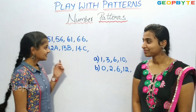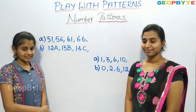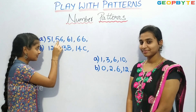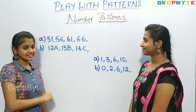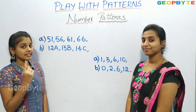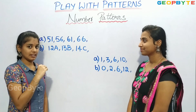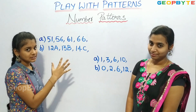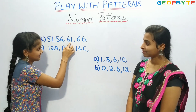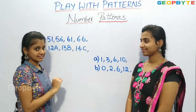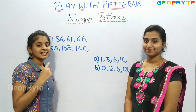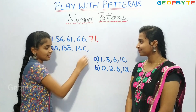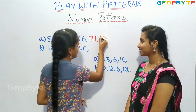Hey kids, see here we have a few number patterns. First, let us see this pattern: 51, 56, 61. If you observe carefully, the difference between each number is 5. That means 51 plus 5 is 56, 56 plus 5 is 61, 61 plus 5 is 66, and 66 plus 5 is 71. Let us write 71. Then 71 plus 5 is 76. Let us write 76.